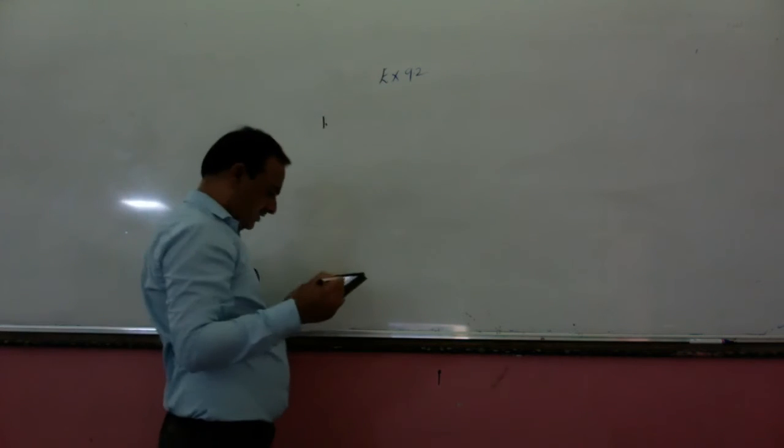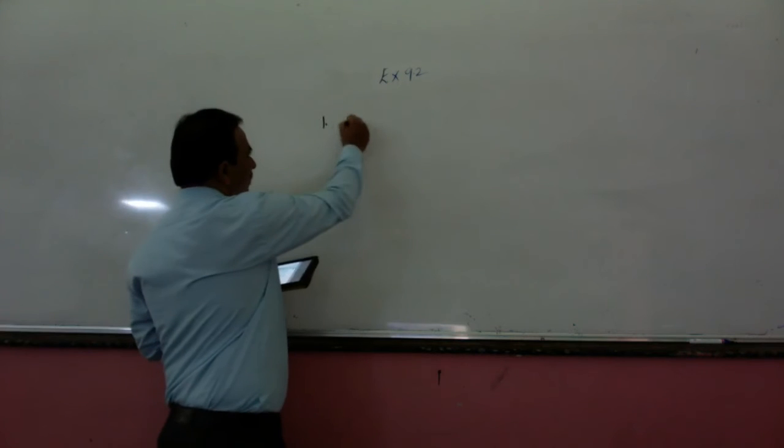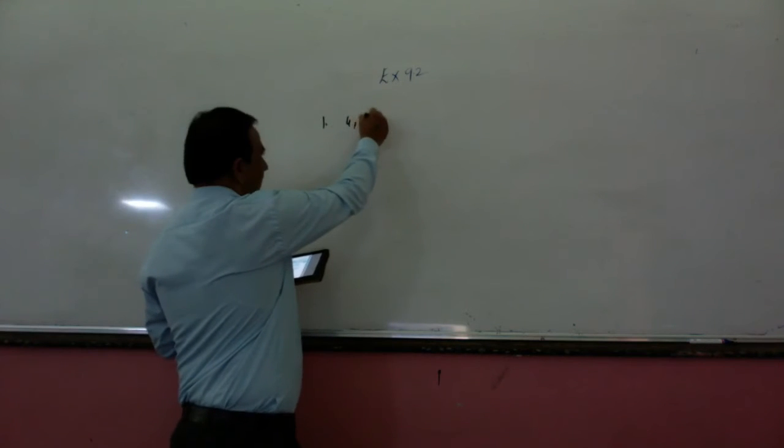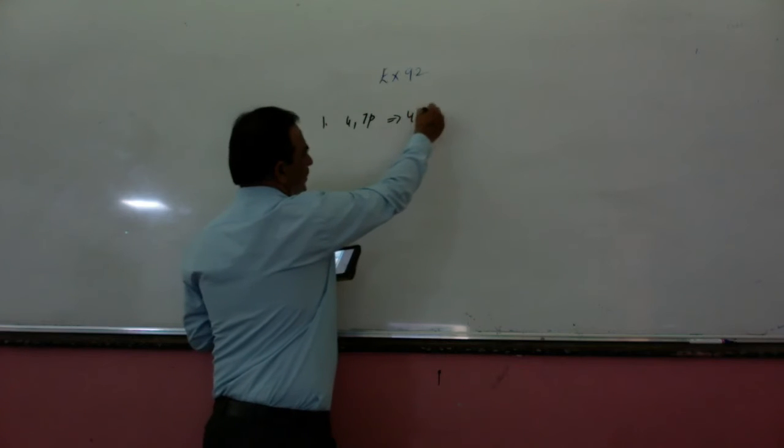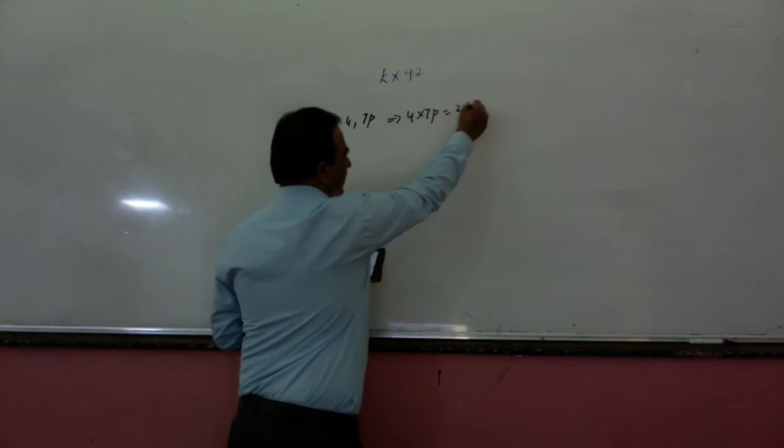First question: A is given 4 and 7, so you have to multiply it now. 4 into 7 is 28.